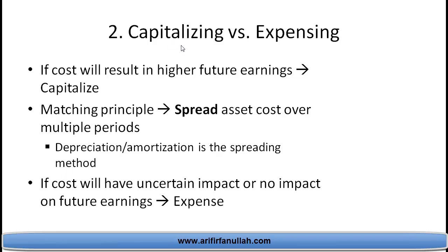If you buy an asset likely to give economic benefit over multiple periods, companies capitalize it — meaning they create an asset on the books. For example, pens and pencils costing a few thousand dollars are used in the period purchased, so you expense them. But a machine worth five million dollars that produces goods for five years is capitalized rather than expensed immediately.